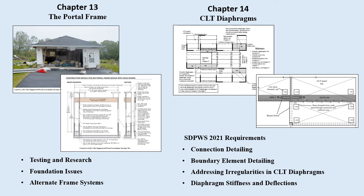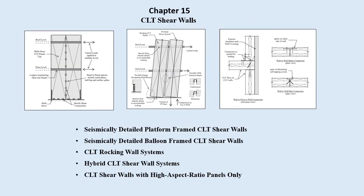Chapter fourteen of the first edition has been replaced with a new chapter on CLT diaphragm analysis. This chapter covers requirements of the 2021 edition of the special design provisions for wind and seismic, connection detailing, boundary element detailing, addressing irregularities in CLT diaphragms, and diaphragm stiffness and deflections. Chapter fifteen is completely new and addresses CLT shear walls including seismically detailed platform frame and balloon frame CLT shear walls, CLT rocking wall systems, hybrid CLT shear wall systems, shear walls with resistance provided by high aspect ratios, and load path connections at panels only.